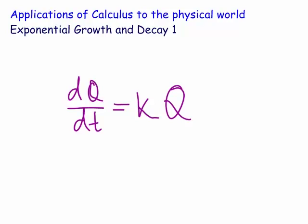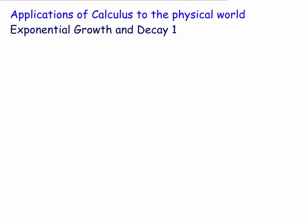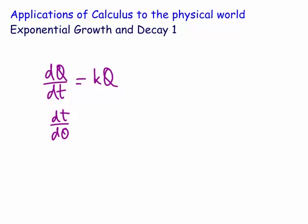We're now going to solve this. Let's have a look at how we would solve this. So dQ/dt, we know it's equal to kQ. What we normally would do is turn it upside down. So dt/dQ is equal to 1 over kQ.